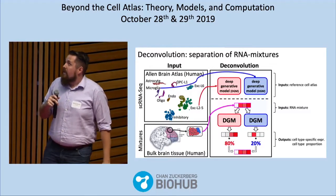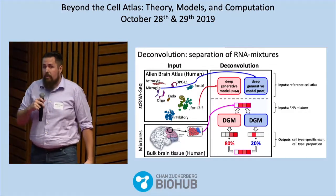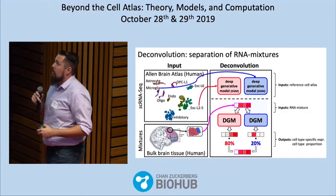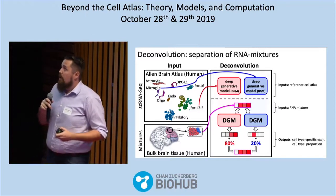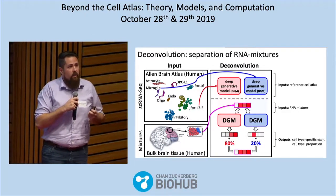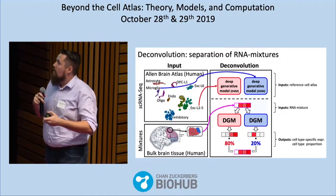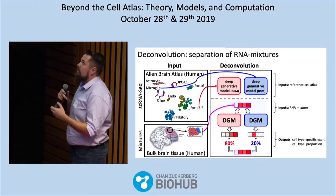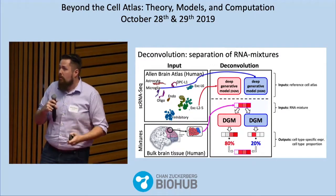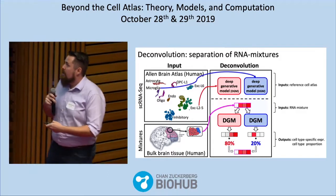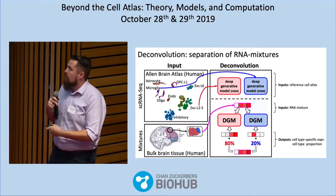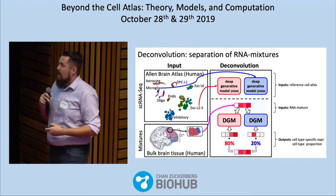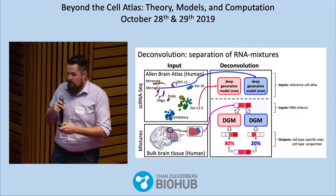Our method is a deep generative neural network with a hierarchical structure. At its lower layers, it utilizes single-cell reference atlases to build individual generative models per cell type that capture the gene expression signature for each cell type. At the higher layers, we pass mixture samples — bulk or patch-seq RNA measurements — through each individual cell-type generative model, produce a cell-type-specific expression profile, and estimate proportions in a way that maximally reconstructs the original mixture sample. Our model estimates both proportions and infers cell-type-specific gene expression profiles from mixture data.